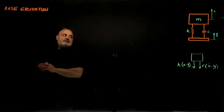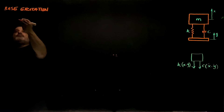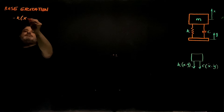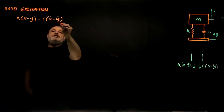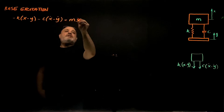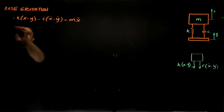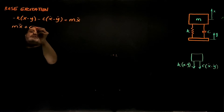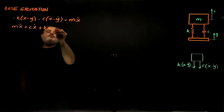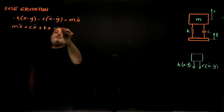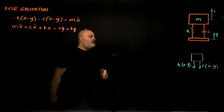Using the sum of forces equals MA, we have negative k(x − y) minus c(x-dot − y-dot) equals the mass times the acceleration x-double-dot. Rearranging so that the x terms are on one side and the y terms are on the other: c·x-dot + k·x = c·y-dot + k·y. This is the equation of motion.